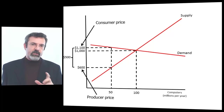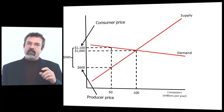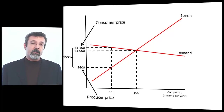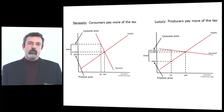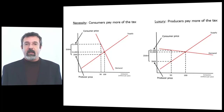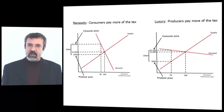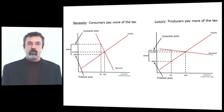The interesting conclusion here is that governments don't have the ability to decide who ultimately pays a tax — that is determined by market forces. The more of a luxury the good is, the more of the tax the producers are going to have to pay in the form of lower profits. The more of a necessity the good is, the more of the tax producers can pass on to the consumer in the form of higher prices.